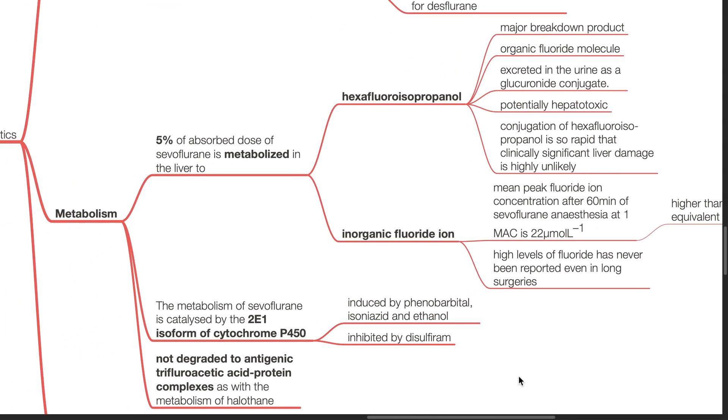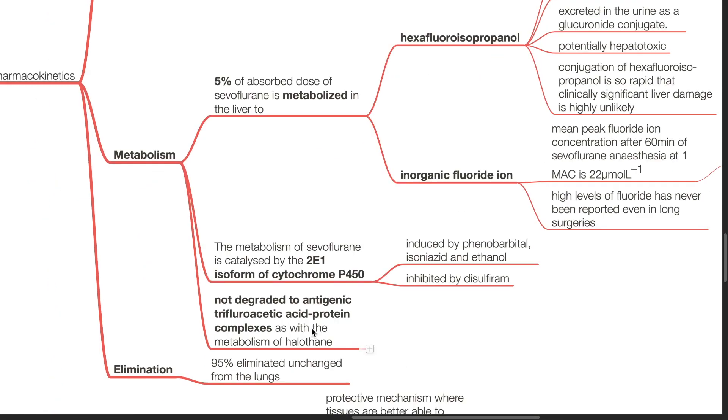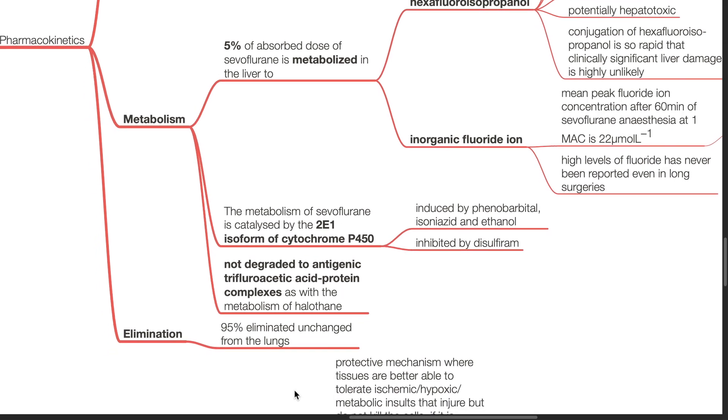The metabolism of Sevoflurane is catalyzed by the 2E1 isoform of cytochrome P450, which is induced by phenobarbital, isoniazide, and ethanol, and inhibited by disulfiram. Sevoflurane is not degraded to antigenic trifluoroacetic acid protein complexes as with the metabolism of halothane. 95% of Sevoflurane is eliminated unchanged from the lungs.